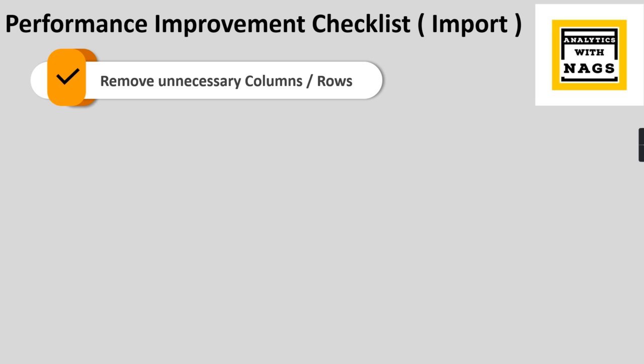The first checklist item is to remove unnecessary columns or rows. For columns, most people understand — you use only the columns needed in the report and limit the rest. For rows, if there are certain years or locations not used at all, you need to check with the user.